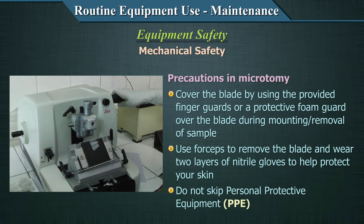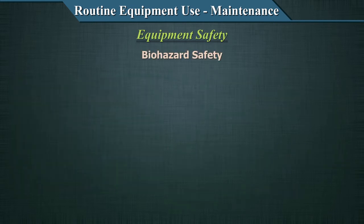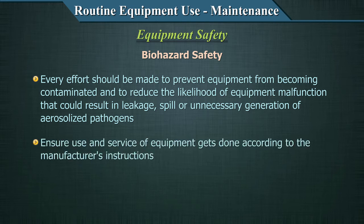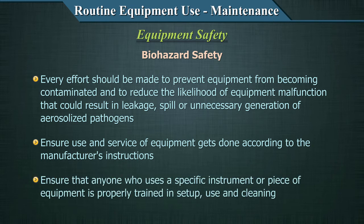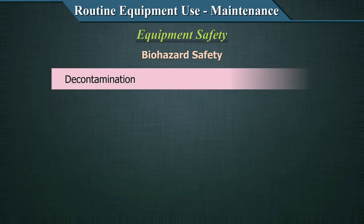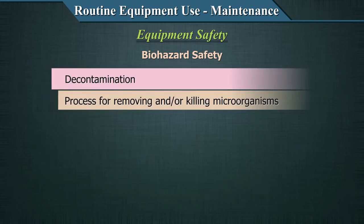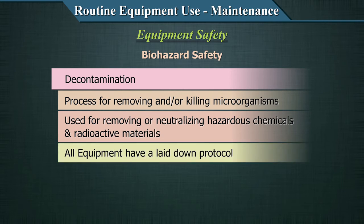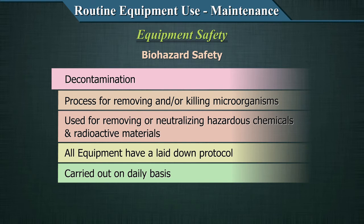Do not skip personal protective equipment while using microtomes — this will prevent lacerations and cuts. The third type of safety is biosafety. Every effort should be made to prevent equipment from becoming contaminated and to reduce equipment malfunction that could result in leakage, spill, or unnecessary generation of aerosolized pathogens. Ensure equipment service is done according to manufacturer's instructions and that anyone using equipment is properly trained in setting it up, using it, and cleaning it. Decontamination is a very important process for removing or killing microorganisms and neutralizing hazardous chemicals and radioactive materials. All equipment should have a laid-down protocol for decontamination, carried out daily after work and on an as-needed basis after spills.